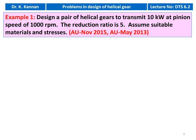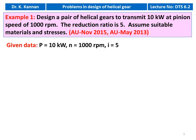The first example is from the November 2015 and May 2013 question paper. Design a pair of helical gears to transmit 10 kilowatt at a pinion speed of 1000 RPM. Reduction ratio is 5. Assume suitable material and stresses. The given data: power = 10 kW, pinion speed = 1000 RPM, speed reduction ratio = 5.